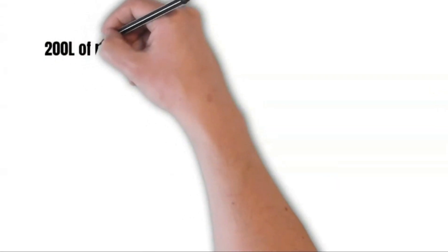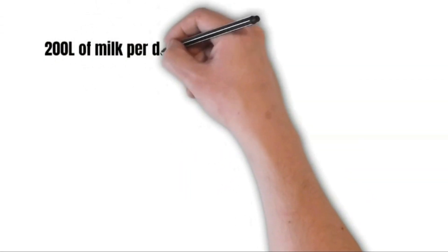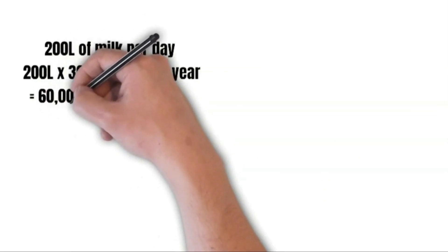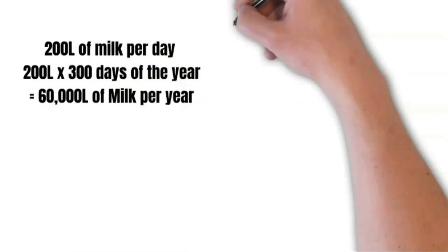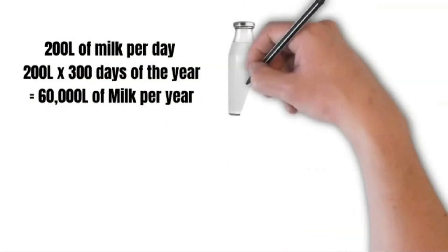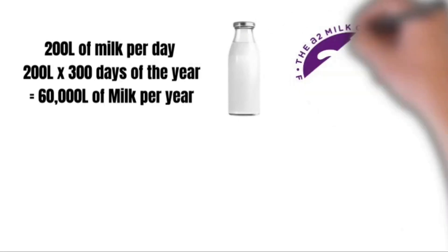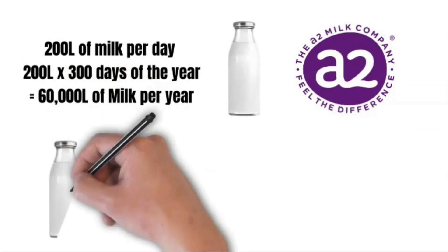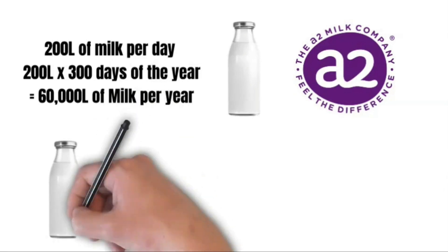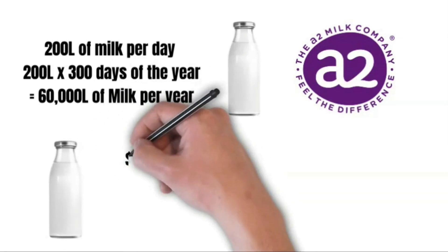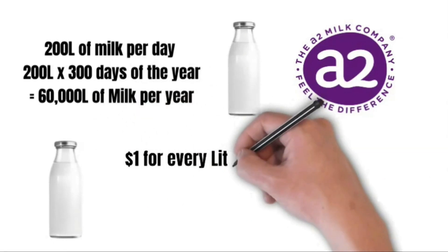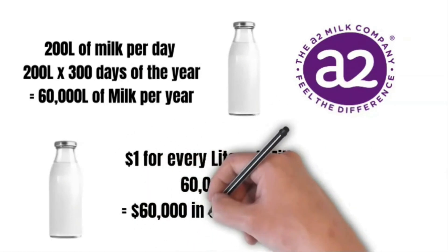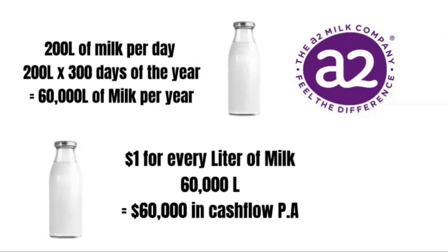In total, 200 litres of milk per day, times 300 days of the year when they milk the cows, gives a total of 60,000 litres of milk per year. This is the good A2 milk — none of that A1 rubbish. The supermarket pays old Walt one dollar for every litre, so that's $60,000 in cash flow per annum.